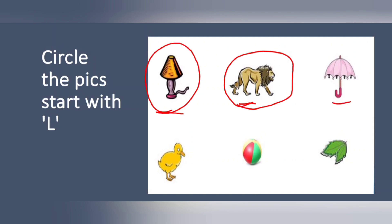This one, umbrella. Umbrella won't start with L, right? So, we should not circle. The next one is duck. It's also not with L. Ball, not with L. What is the next one? That is leaf. What will be there on the trees? Leaves, right? L for leaf.